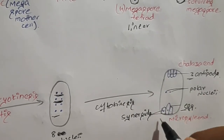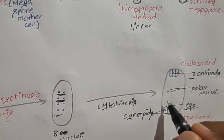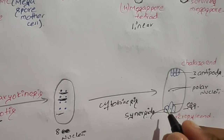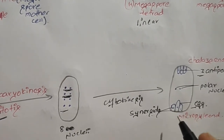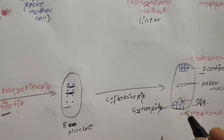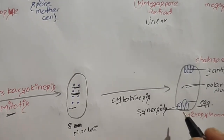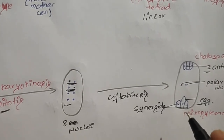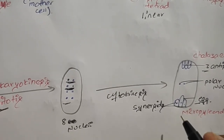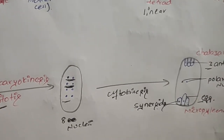In total, seven cells are present. The presence of the eight-nucleate and seven-celled stage is known as the polygonum type of the embryo sac.